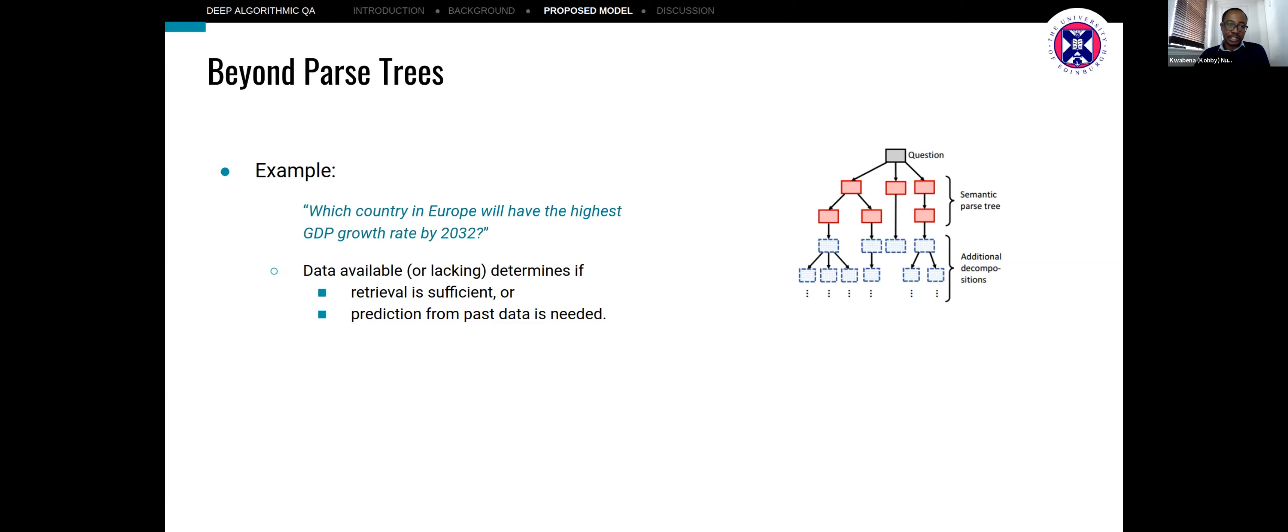Answering the question will depend first on whether we have data available to do an immediate retrieval of the facts from some knowledge source. And if that fails, there is a need to perform some kind of prediction over other data that might be available. However, using a shallow parse means that you can't decompose a problem any further.